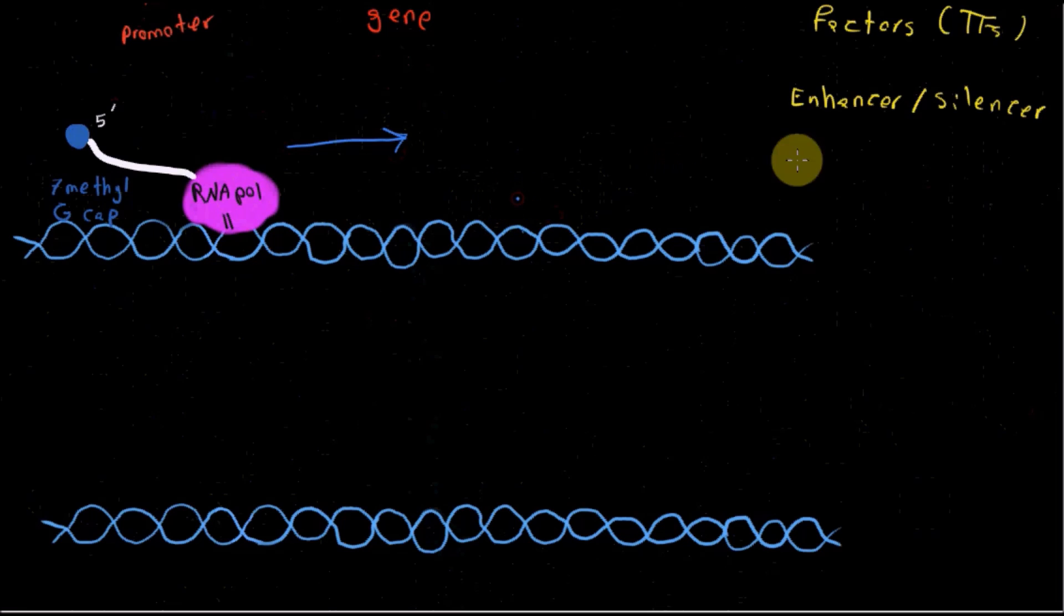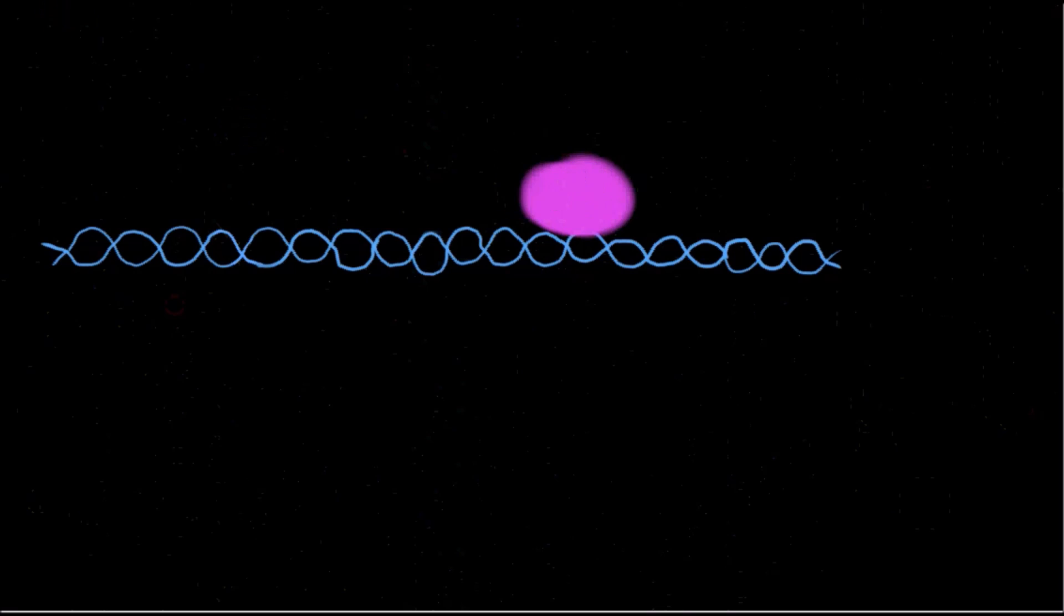I'm going to go to termination over here, draw it here. Again, for simplicity, I draw the whole complex with pink color. But the main enzyme that is involved here is RNA polymerase 2. Let's draw our RNA transcript that has been made so far. It looks kind of like this. And this is its 5' end.